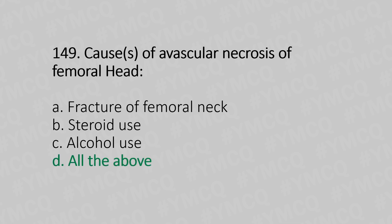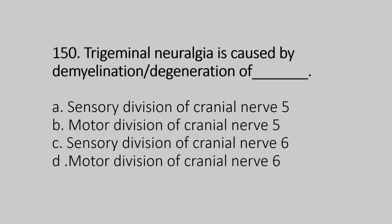Option D: all of the above. Now let's move to question number 150. Trigeminal neuralgia is caused by demyelination or degeneration of — Option A: sensory division of cranial nerve 5. Option B: motor division of cranial nerve 5. Option C: sensory division of cranial nerve 6. Option D: motor division of cranial nerve 6.